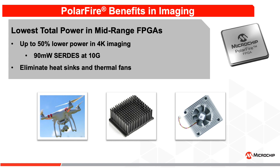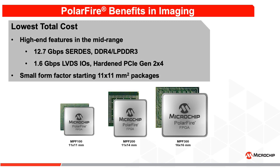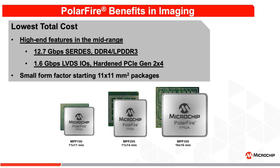Microchip's PolarFire FPGAs are a perfect choice for smart applications on the edge. They support 4K video processing and consume 50% lower power compared to similar FPGAs. This helps reduce your bill of materials and module size by eliminating heat sinks and cooling fans. PolarFire offers high-end features in mid-range FPGAs like 12.7 Gbps SERDES, DDR4 memory support, 1.6 Gbps LVDS IOs, and hardened PCIe Gen2 x4 root port and endpoints.